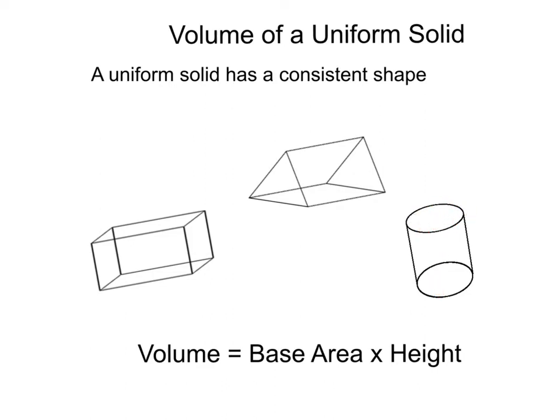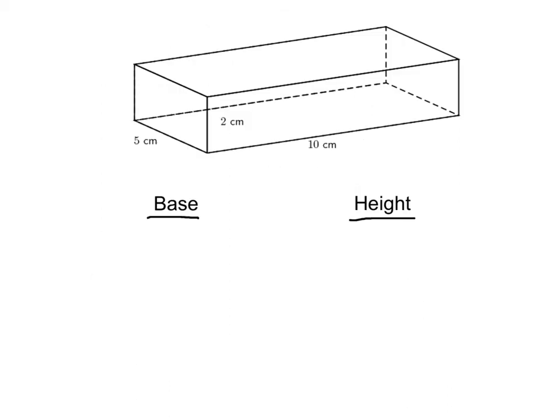Whenever you have a uniform solid, you can find the volume by multiplying the area of the base times the height. Let's do a couple quick examples.